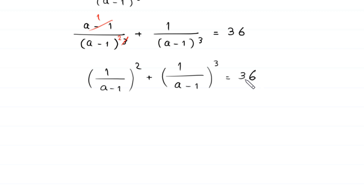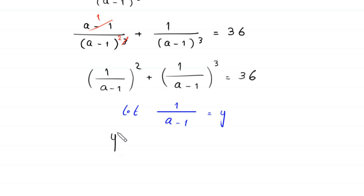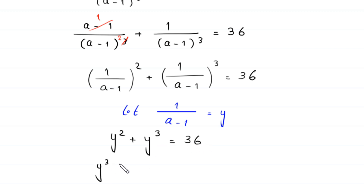We suppose that 1 over (a minus 1) equals y. The equation becomes y squared plus y cubed equals 36. Moving 36 to the left hand side gives y cubed plus y squared minus 36 equals zero.